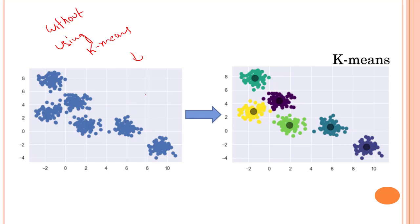After applying the k-means algorithm, the dataset gets grouped with different colors denoting different clusters. This black dot over here is nothing but the centroid of each and every cluster — all of these are the centroids in different colors. The main aim of the k-means algorithm is to minimize the sum of distances between the data points and their corresponding clusters.